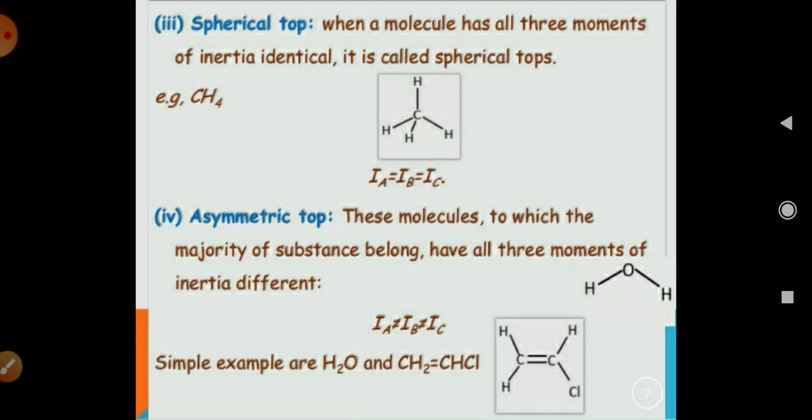Now, next is spherical top. In a spherical top, when a molecule has all three moments of inertia equal, it is called a spherical top. For example, CH4. All three inertias are identical: Ia equals Ib which equals Ic. So for a spherical top molecule, all three inertias are equal.